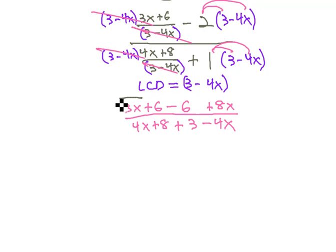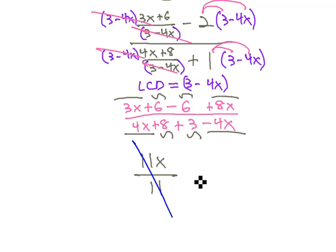So now when we combine like terms, 3x plus 8x is 11x, 6 minus 6 is 0, over 4x minus 4x is 0, and 8 plus 3 is 11. And lo and behold, the 11's reduce out, and the answer we get is just x.